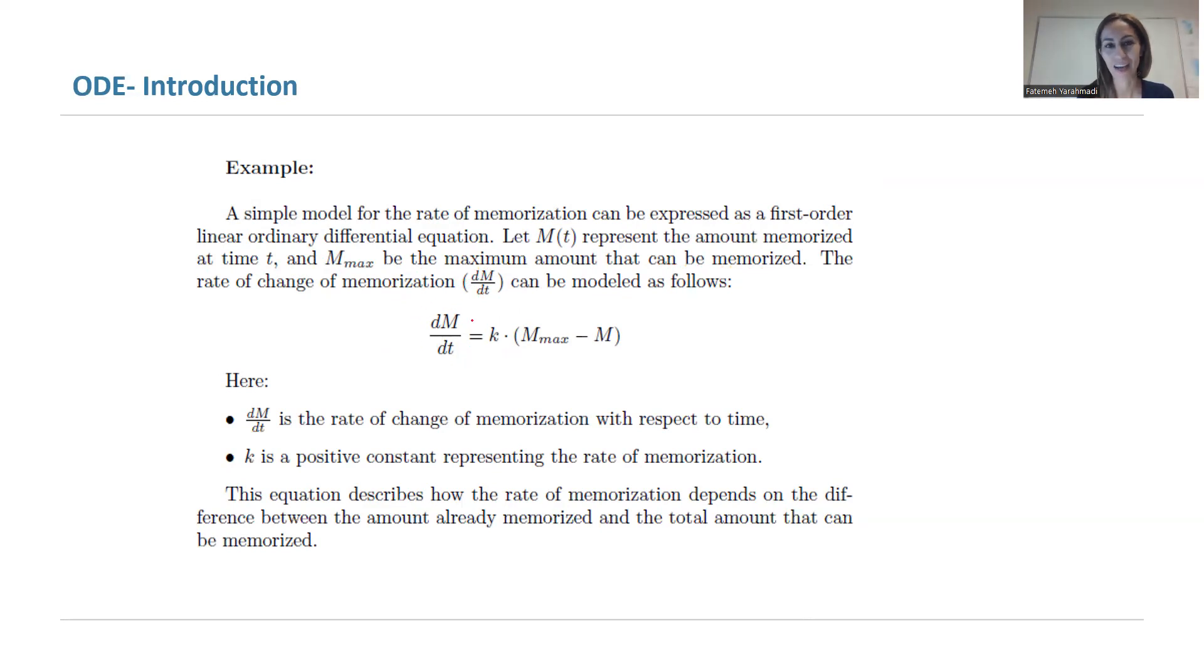On the left side you have the derivative dM/dt, and on the right side you have k(M_max - M). This equation describes how the rate of memorization depends on the difference between the amount already memorized and the total amount that can be memorized.